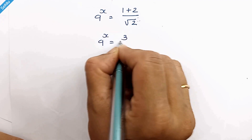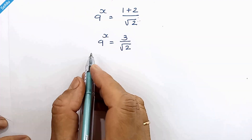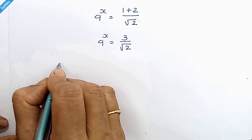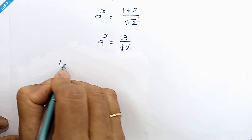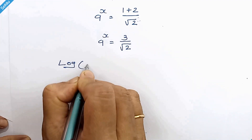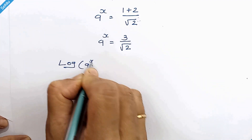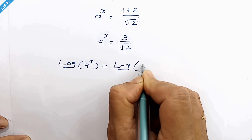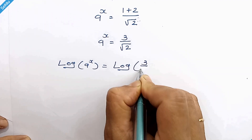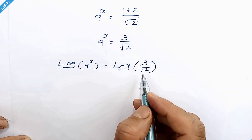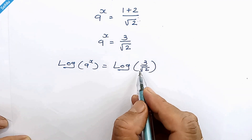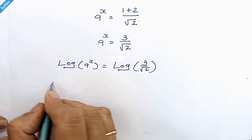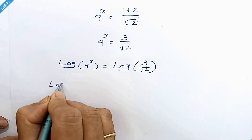So it will be 9 to the power x is equal to 3 over square root of 2. Now let's take log at both sides, so it will be log of 9 to the power x is equal to log of 3 over square root of 2. We need to get rid of this square root sign.